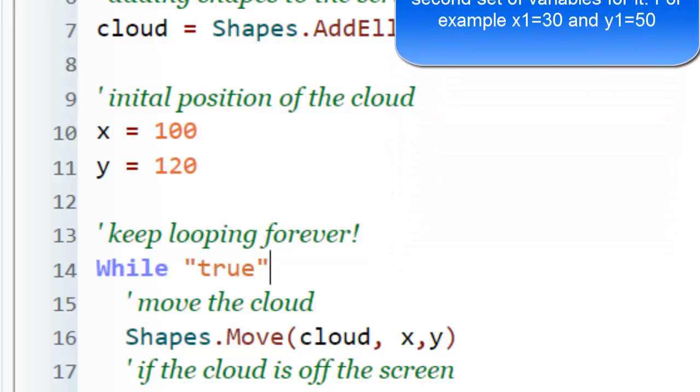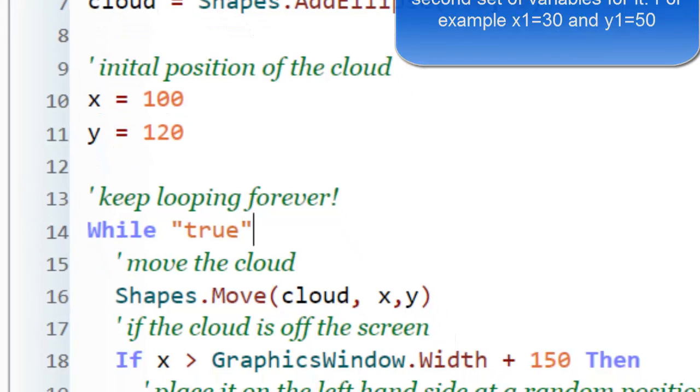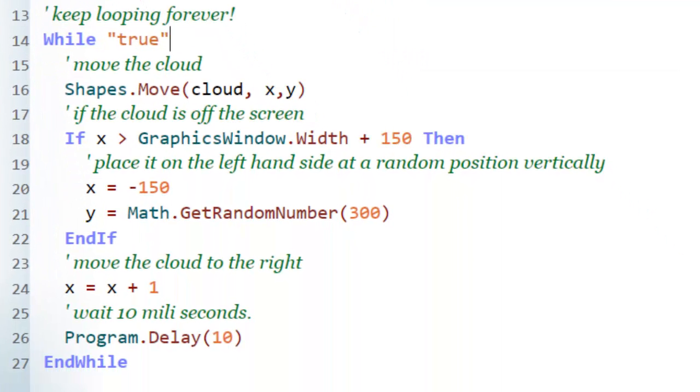Lines 14 to 27 is the main loop. I've put a comment saying keep looping forever. With animation, you want to keep it looping until the user presses the close button, which is why it says while true.